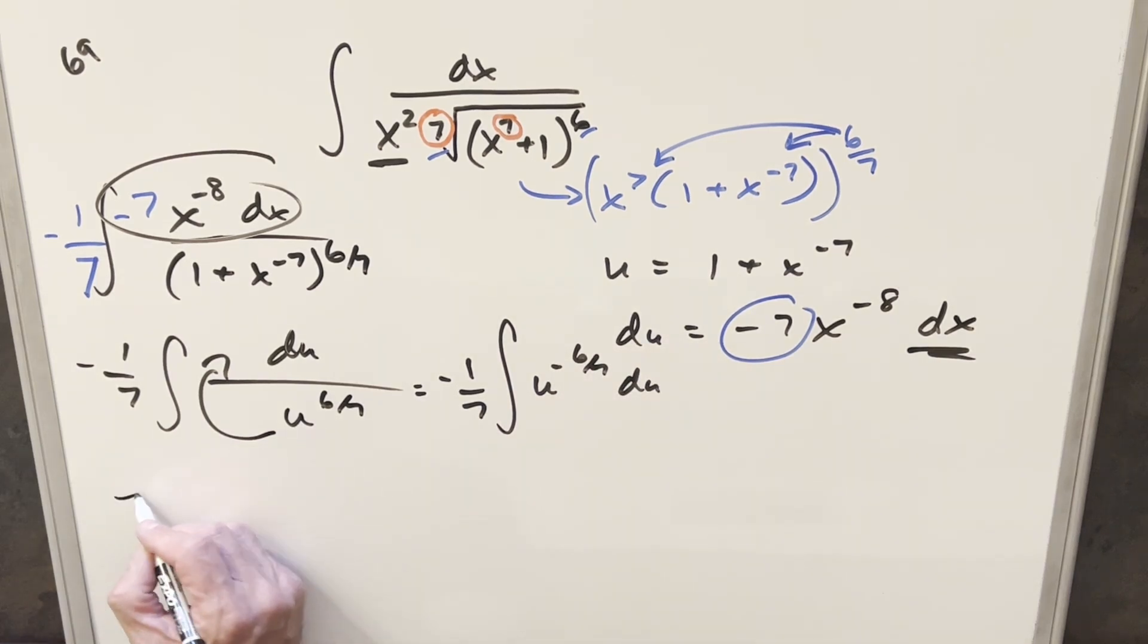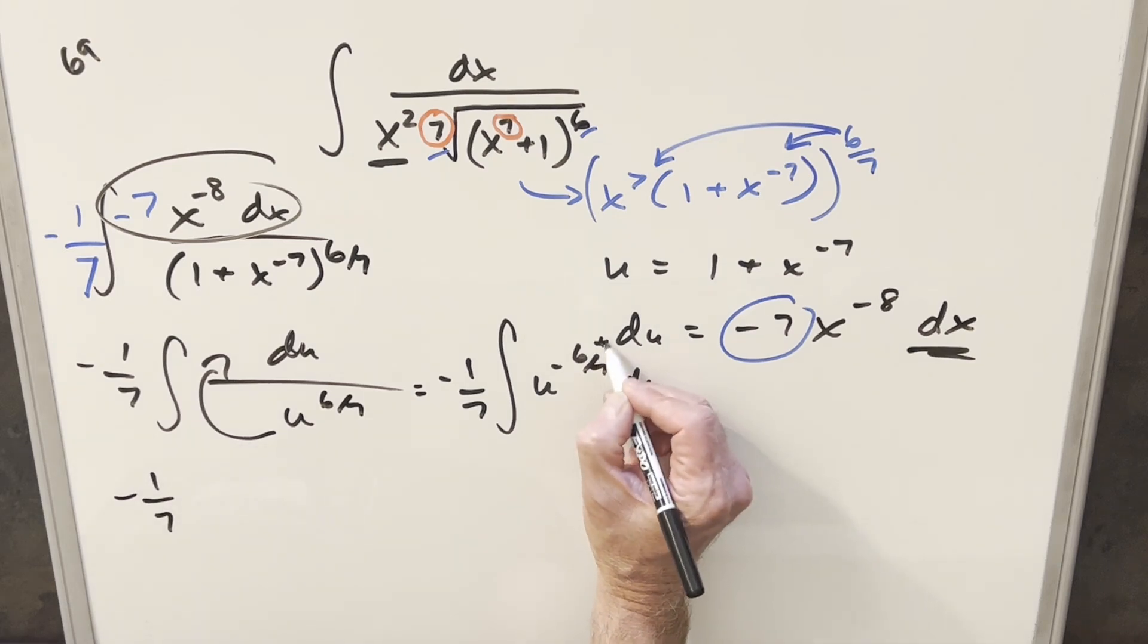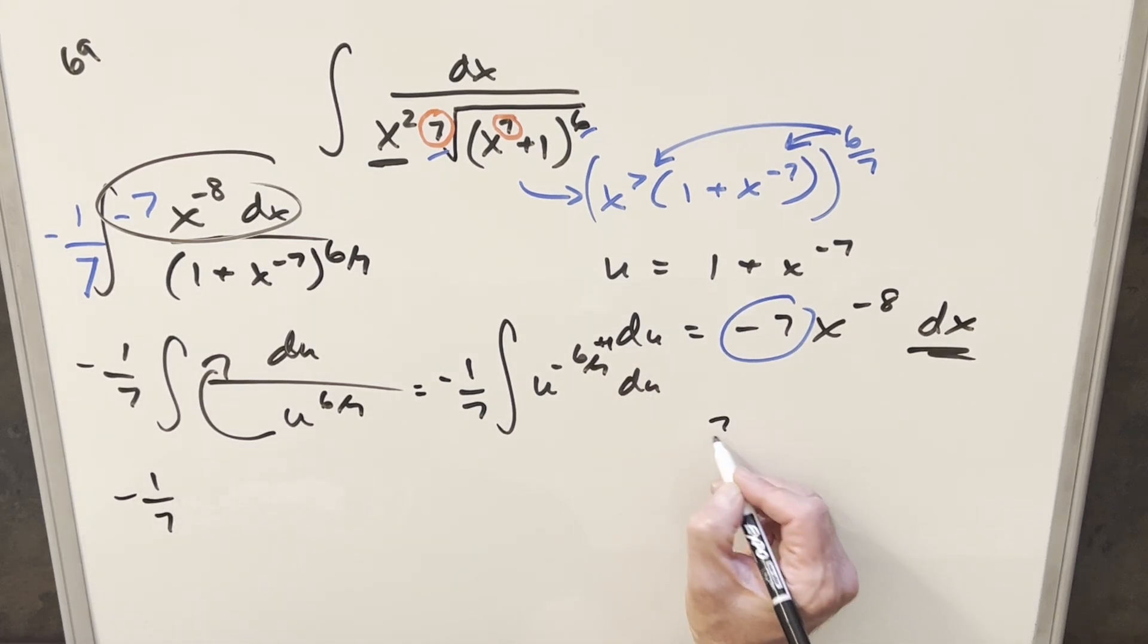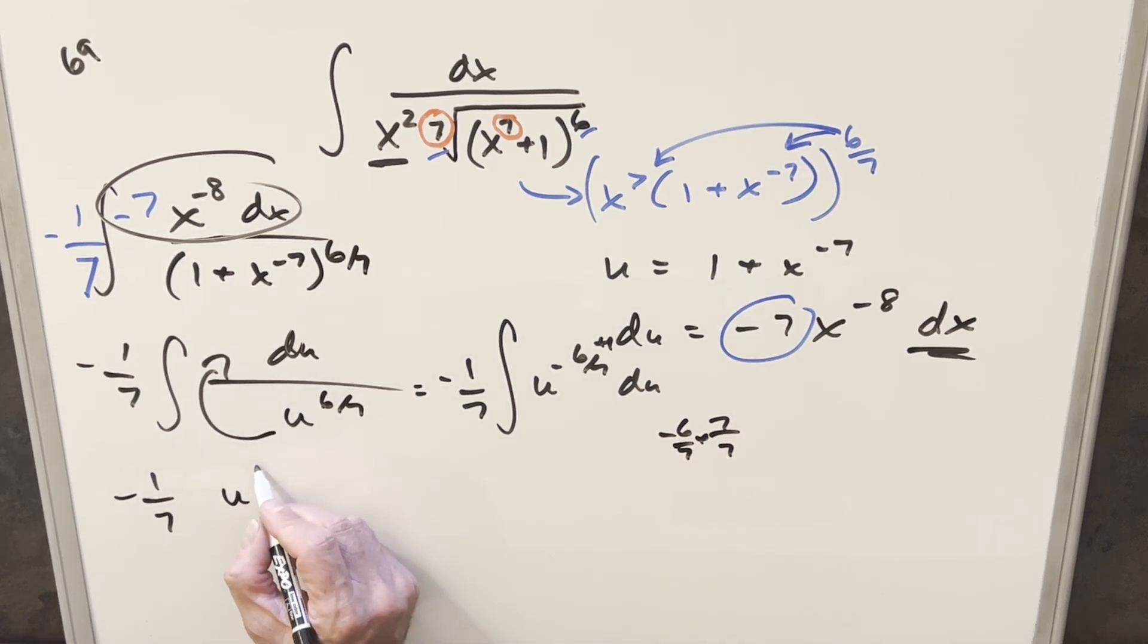Integrate with power rule. What we're going to do, if we add 1 there, we need to write that 1, think of the 1 as 7 over 7, minus 6 over 7, plus 7 over 7. Now our exponent's going to become u to the 1 over 7th. Take the reciprocal of this, and we have a 7 coming up front. 7's canceling, we just have minus u to the 1 over 7th.